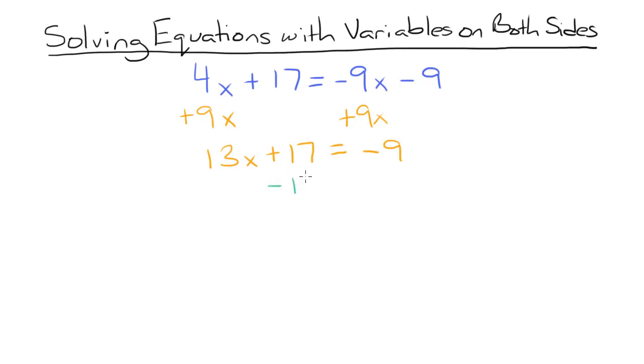Now I'm going to subtract 17 from both sides of our equation. So we have 13x equals negative 9 minus 17 is negative 26. So notice we have a negative over here, so we're dealing with negatives anyways. So it's just up to you back at this first step if you want to have negative x values or negative constants. Either way will get you the right answer.